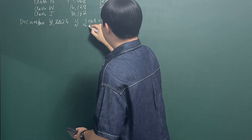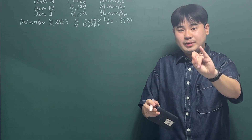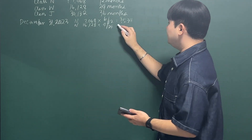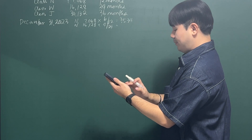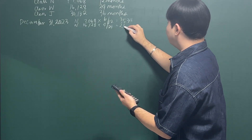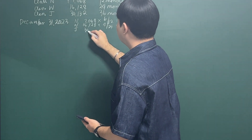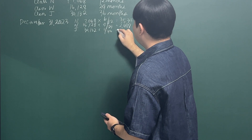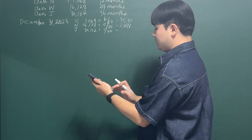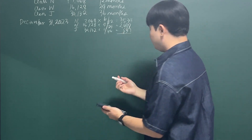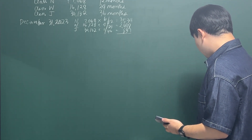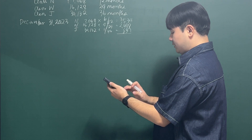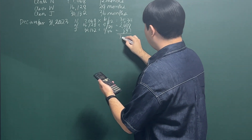For Class W: 16,128 × 4/24 — September, October, November, December is four months in 2023 — equals 2,688. For Class J: 30,132 × 1/36 — only December passed in 2023 — equals 837. Adding them up: 3,534 + 2,688 + 837, your total insurance expense for 2023 is 7,059.